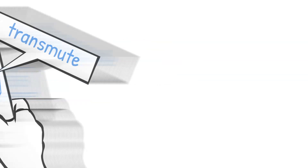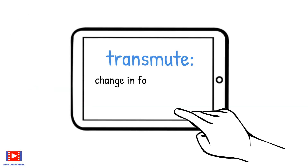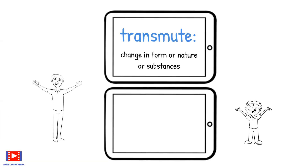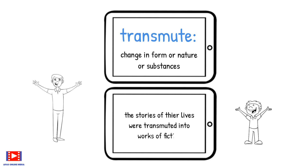Transmute. Meaning: change in form, nature, or substance. Example: The stories of their lives were transmuted into works of fiction.